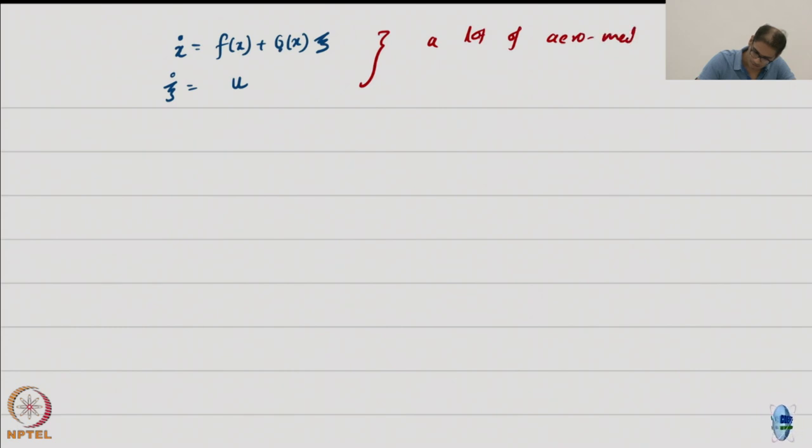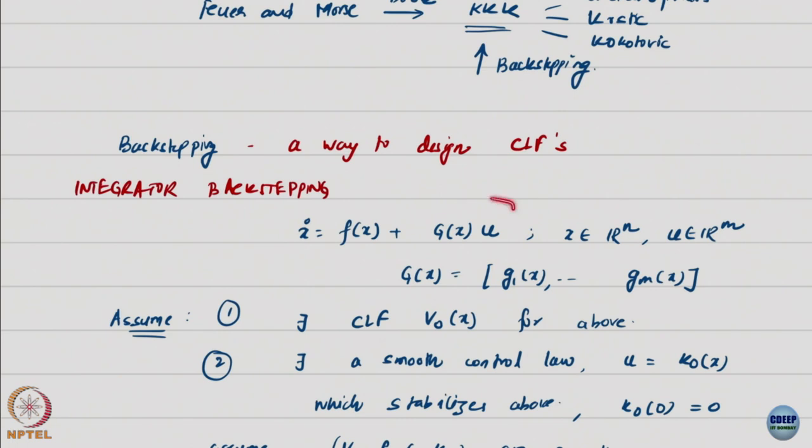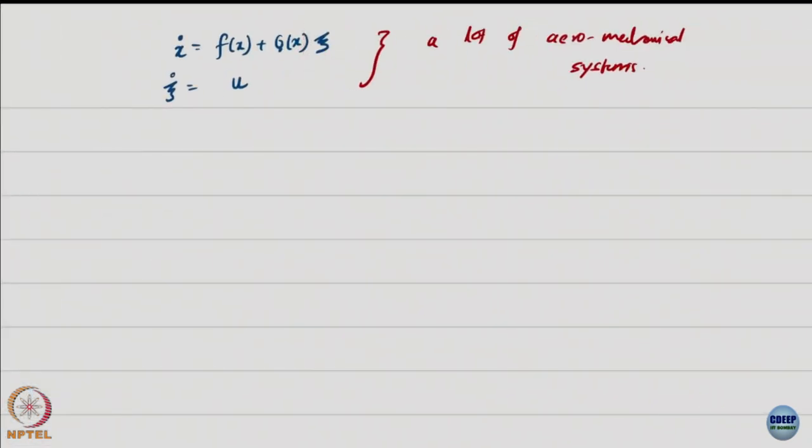Just think double integrator. All double integrators have this structure: x1 dot is x2, x2 dot is u. Already very close to mechanical systems like spring-mass-damper systems. Even with nonlinear damper like pendulum: theta dot is omega, omega dot has minus sine theta and so on. Most aeromechanical systems have this kind of structure, and there's great value in studying this structure.